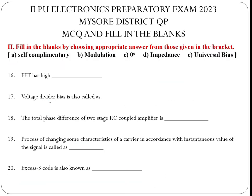Fill in the blanks: FET has high impedance — actually it should be high input impedance, though the question has no perfectly matching option. Voltage divider bias is also called universal biasing.